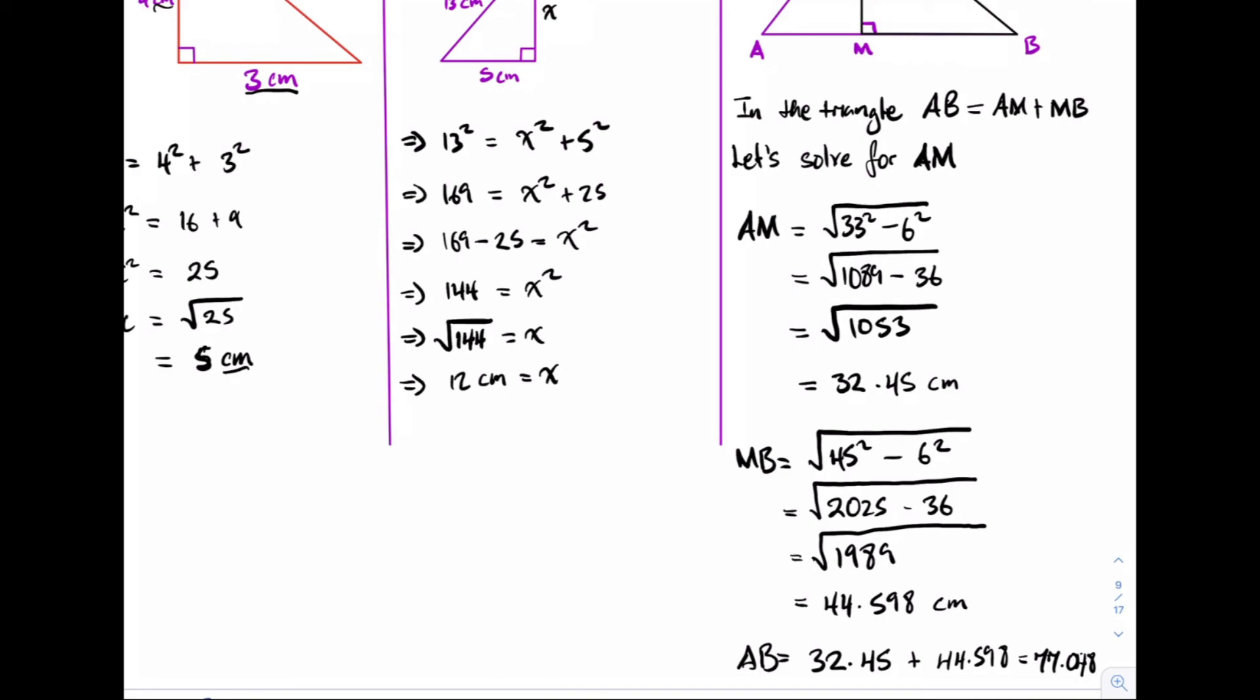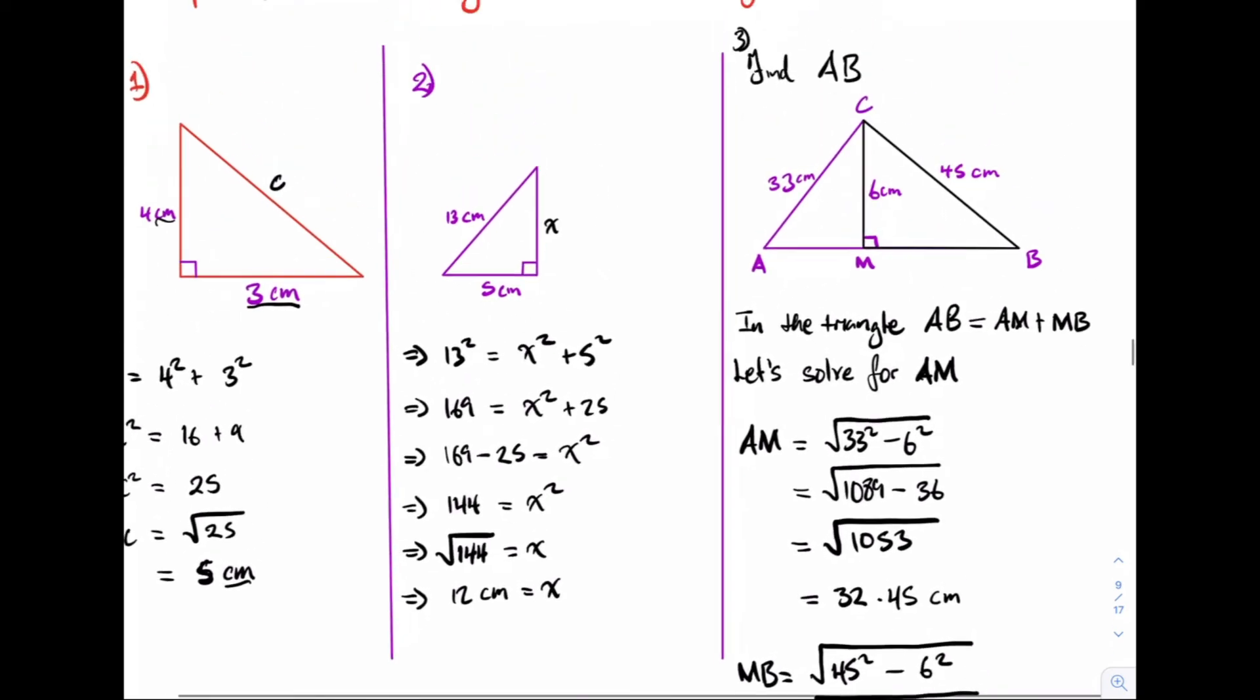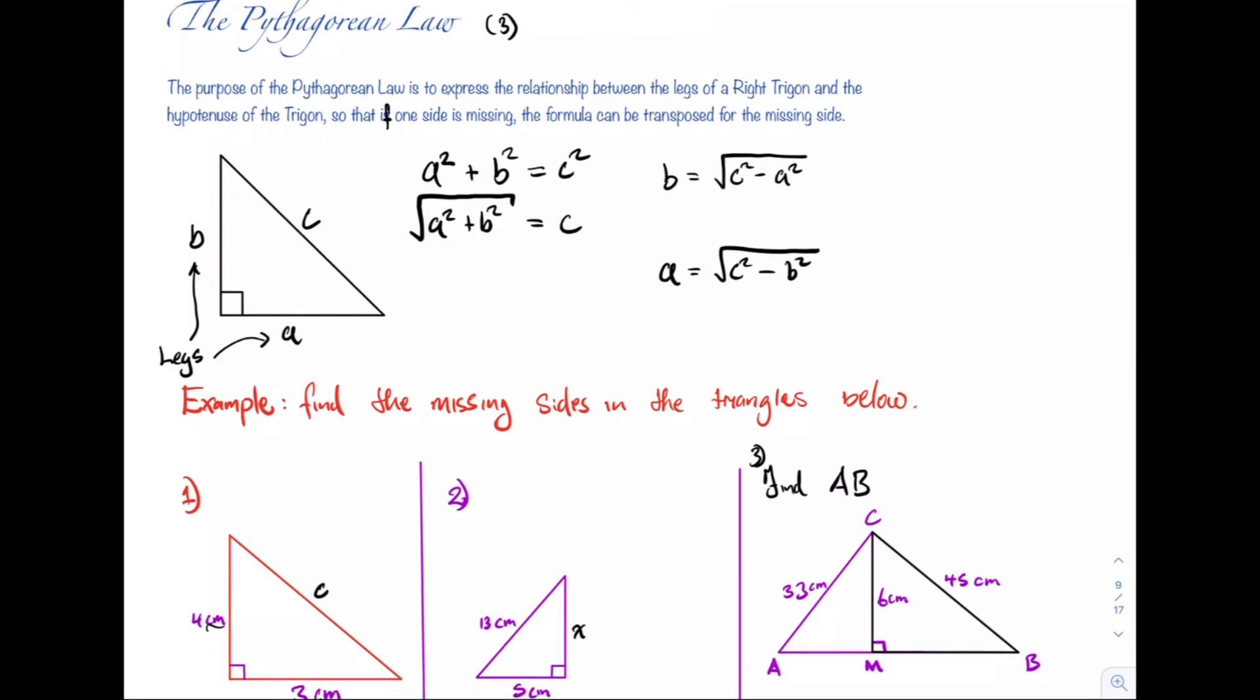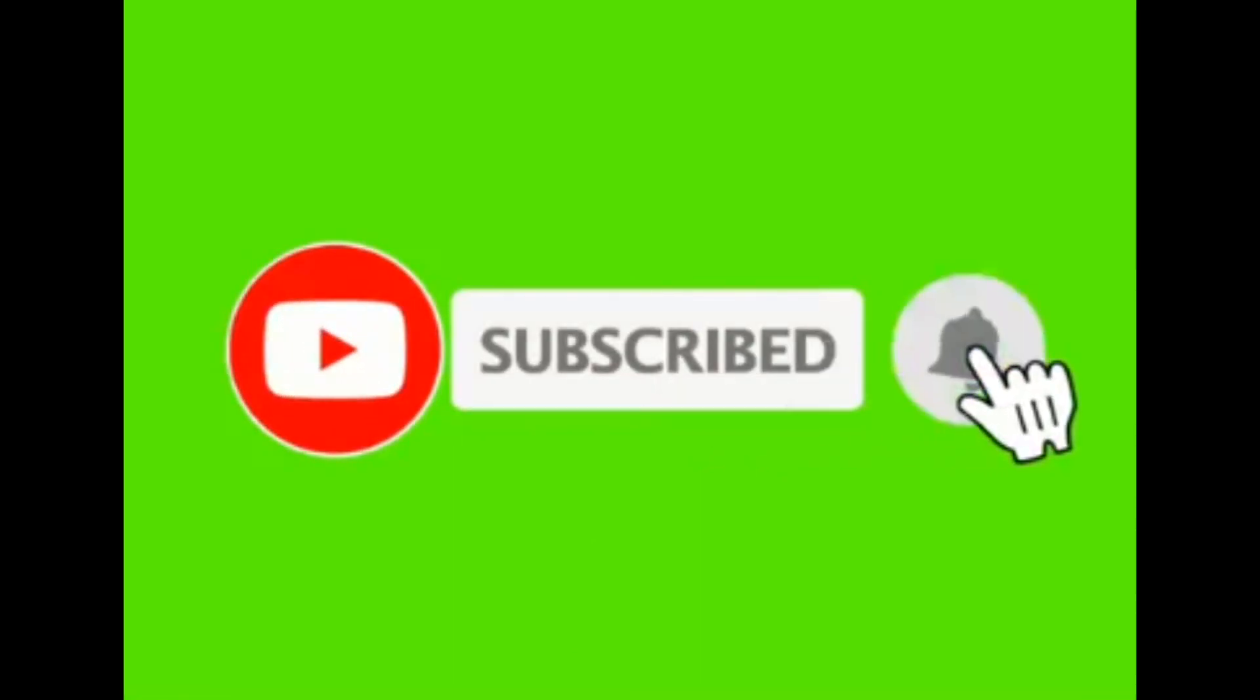So this is how we use the Pythagorean law to solve for the missing side in a right-angled triangle. You can use it to solve for the hypotenuse, or you can use it to solve for one of the legs. Using these three formulas. So this one is for the hypotenuse, and these two formulas are for the legs. That is it for this video. Please remember to hit the notification bell, like, share, and subscribe for future post notification. If you have any questions, please give us a comment.